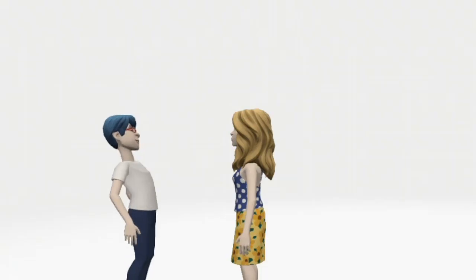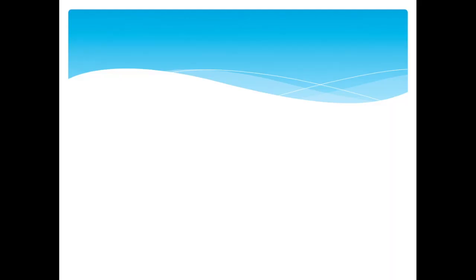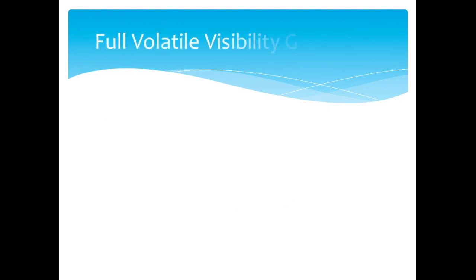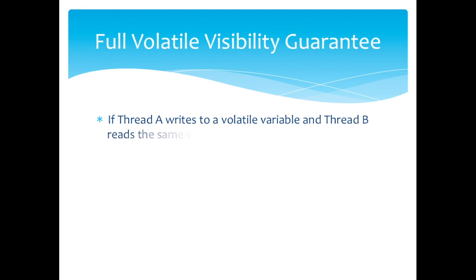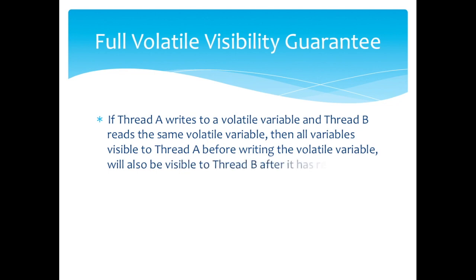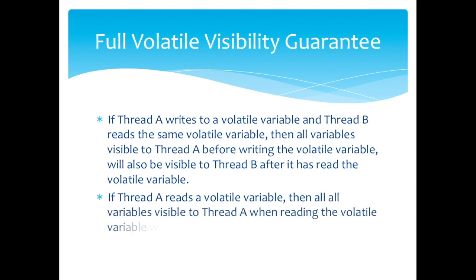I assume you have followed me so far. Full volatile visibility guarantee. The visibility guarantee of Java volatile goes beyond the volatile variable itself. If thread A writes to a volatile variable and thread B subsequently reads the same volatile variable, then all variables visible to thread A before writing the volatile variable will also be visible to thread B after it has read the volatile variable.